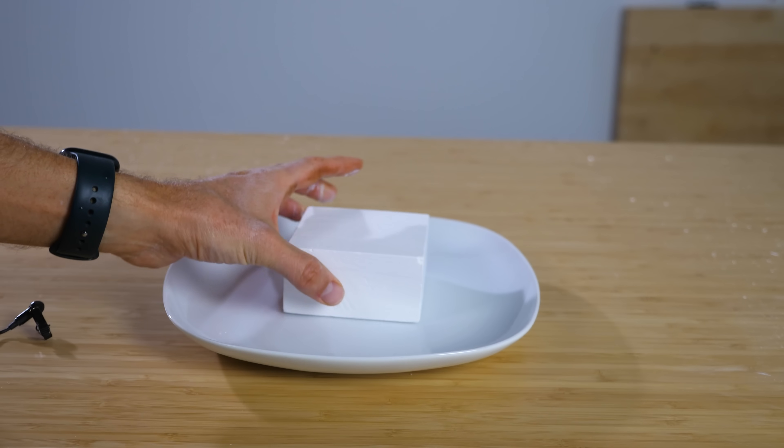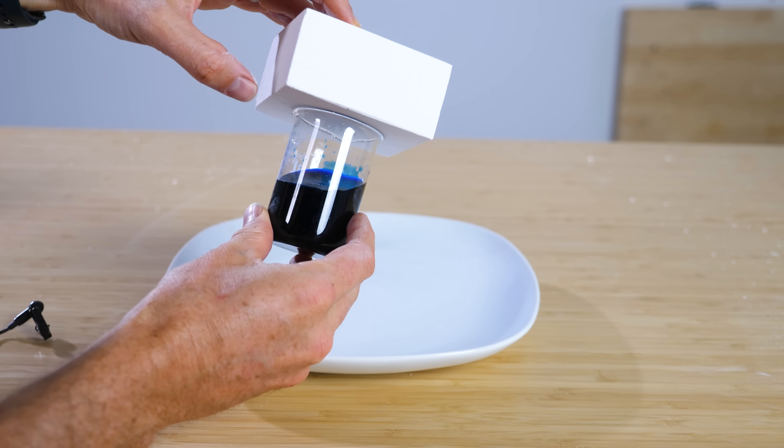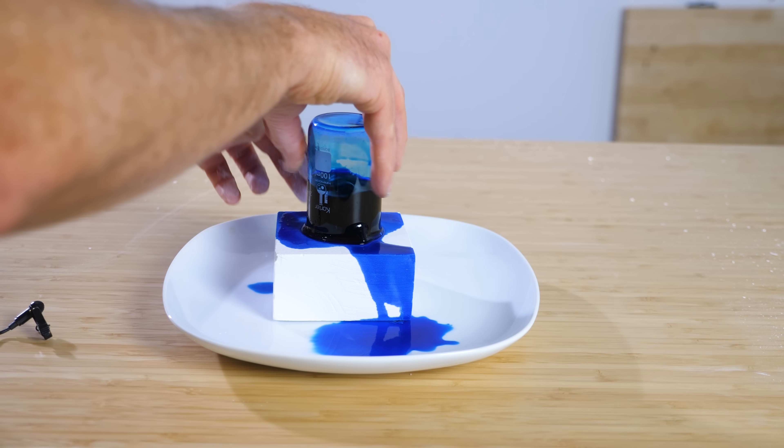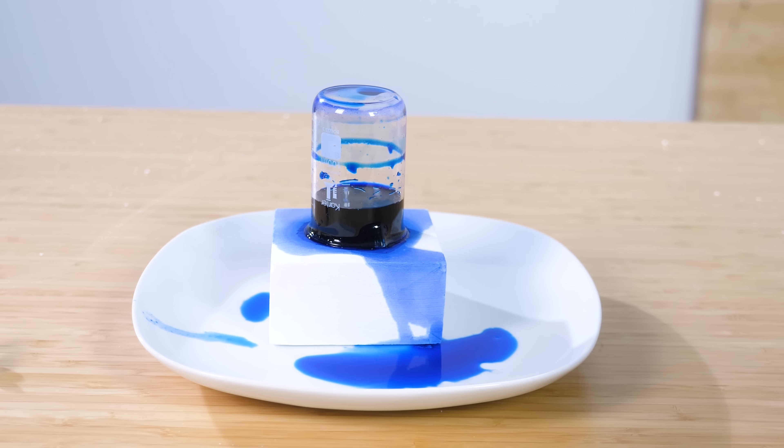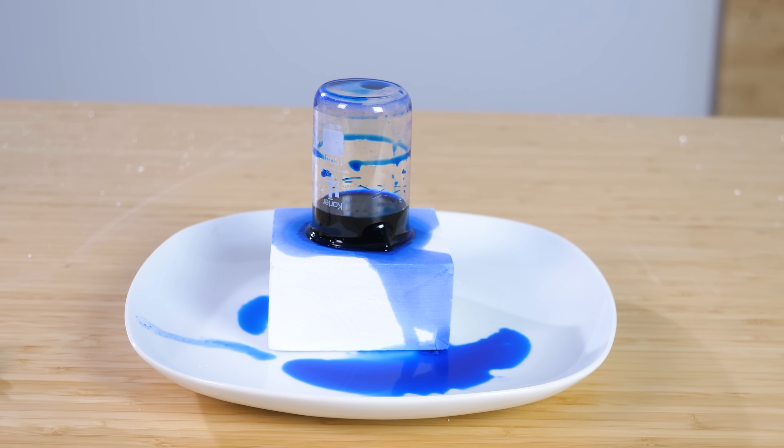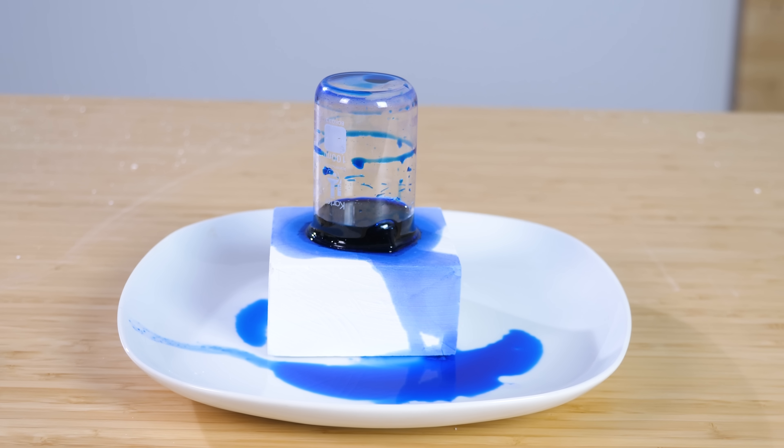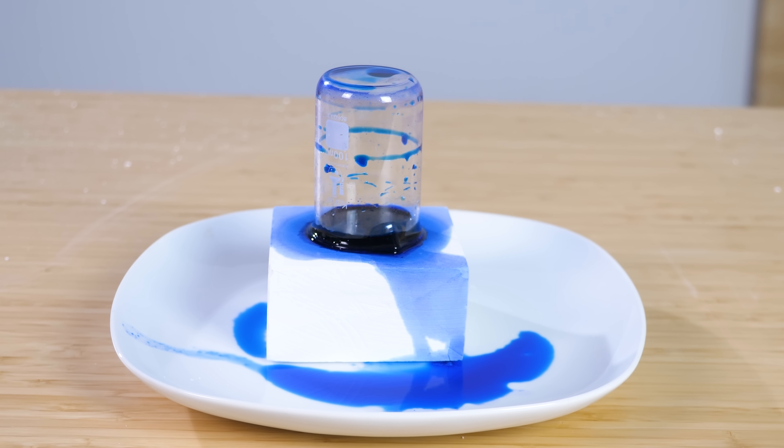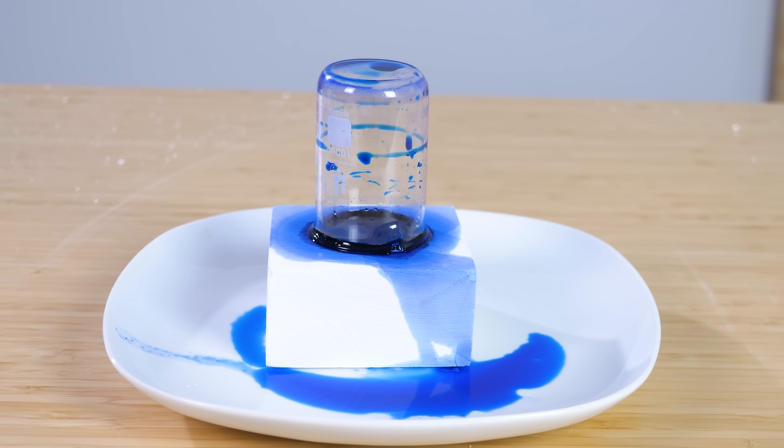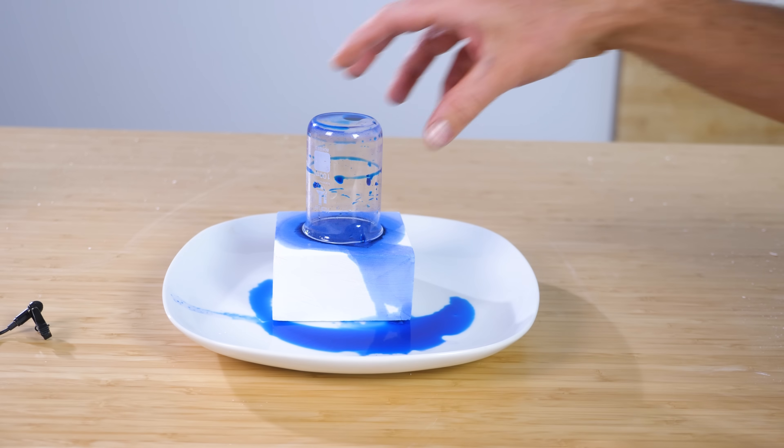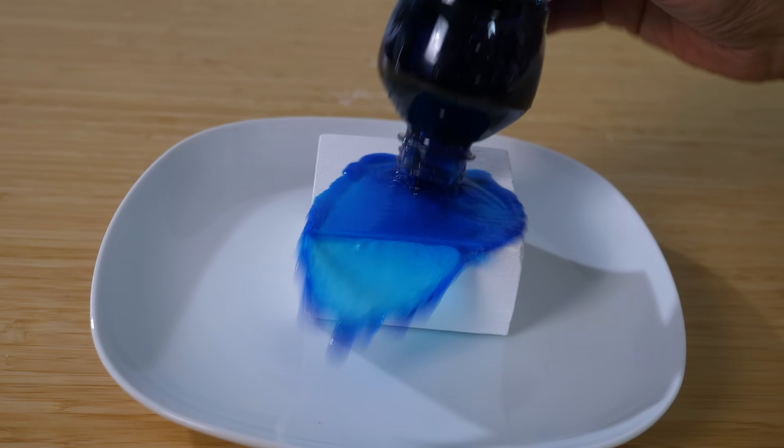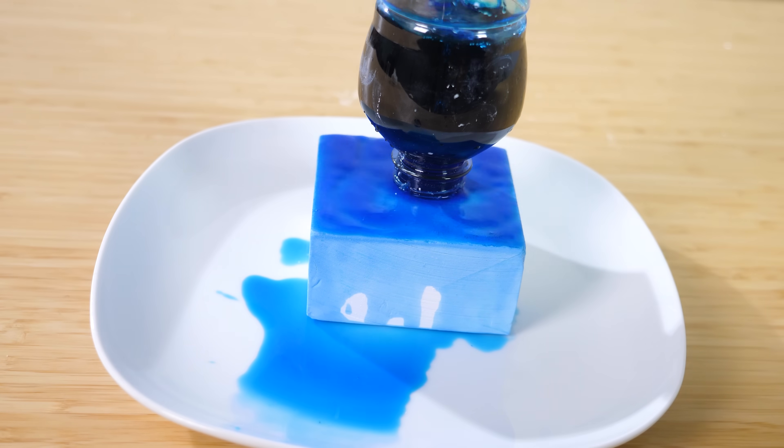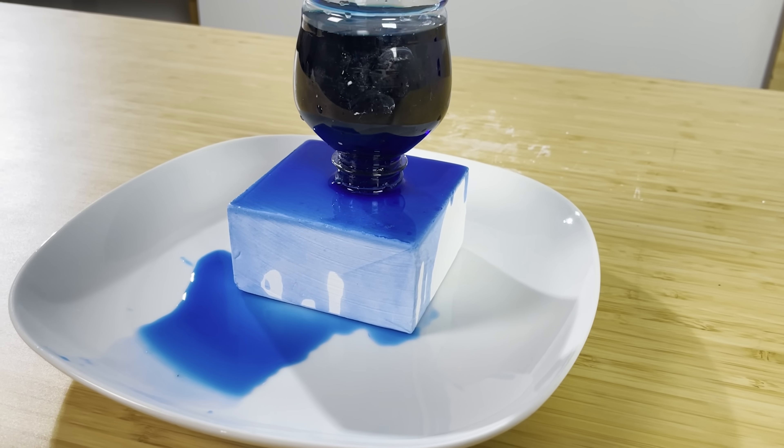I have here a solid block, but this block is really thirsty. We can even use a bigger bottle and it can still soak it all in. So what is this magic thirsty block?